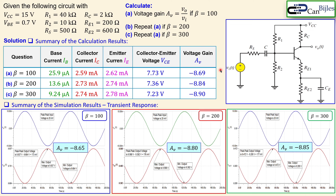If you need a lot of gain and stability is not critical, you might choose the design from example three. But for a stable design where the voltage gain remains nearly constant despite large variations in beta, this partial bypass approach is preferred. The tradeoff depends on your application requirements.